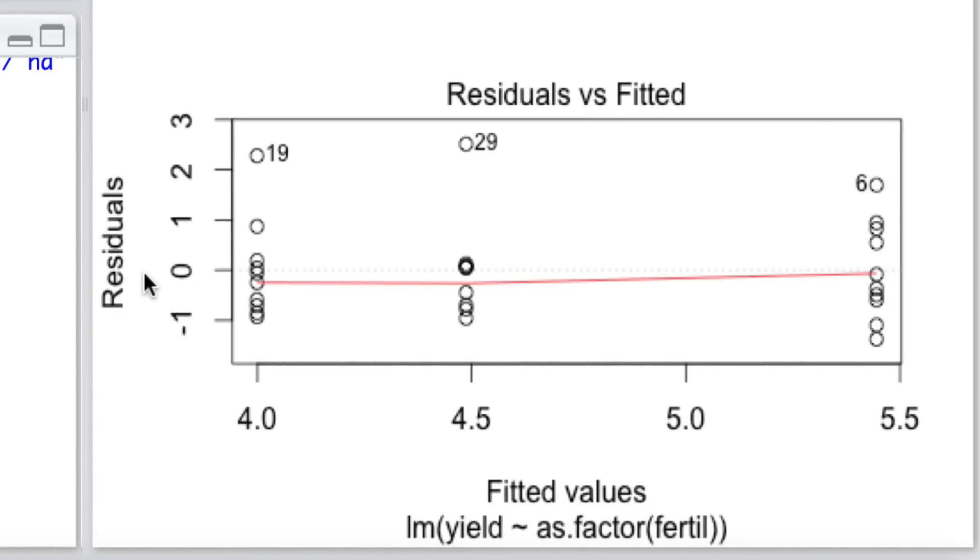And here you'll see the residuals. They happen to be the standardized residuals versus the fitted values. These are the predicted values of yield for each of these different cases. And what we can see here is that the overall variance is relatively homogeneous for all levels of those fitted values.